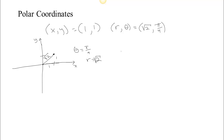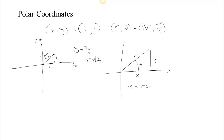When converting between polar and Cartesian, there are some key relationships. Zooming in on the picture, no matter what the angle is, X is the horizontal component and Y is the vertical component, with R as the radius. Using trigonometric ratios, x = R·cos θ and y = R·sin θ. These two equations are very handy — you should know them by heart. They let you take a radius and angle and easily convert to XY coordinates.